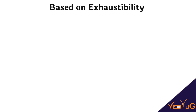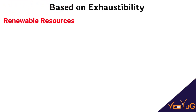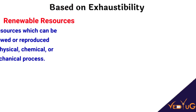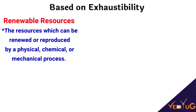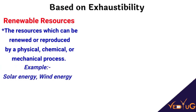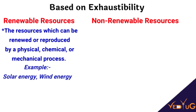On the basis of exhaustibility, resources are classified as renewable and non-renewable. Renewable resources can be renewed or reproduced by physical, chemical, or mechanical processes. For example, solar and wind energy, forests, and wildlife. Wind energy was amongst the first resources harvested by human beings to improve our livelihood and they produce energy also.